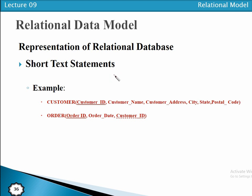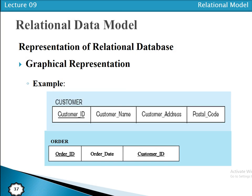In the short text statement method, the name of the relationship is followed by the set of attributes enclosed in parentheses. The main benefit of this method is its simplicity. In the graphical representation method, the relation is represented by a rectangle containing its attributes, which provides a better means of expressing referential integrity constraints and relationships among different relations.